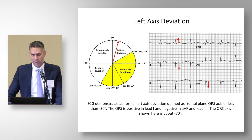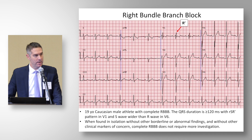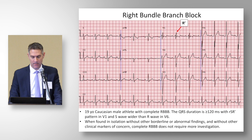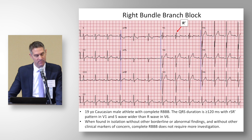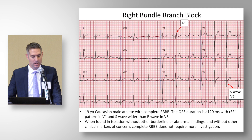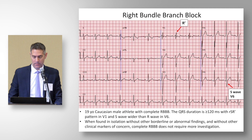An example of complete right bundle branch block shows the RSR prime appearance in V1 with a QRS duration greater than 120 milliseconds, and an S wave in V6 that is wider than the R wave in V6. In isolation with no other clinical markers of concern in a trained athlete, this would not require more investigation; in combination with other borderline or red box findings, it would.